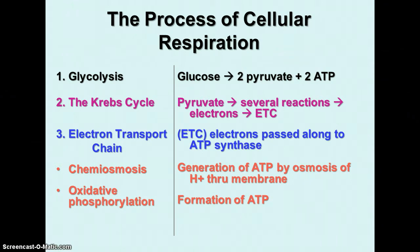In the electron transport chain, there are two main processes occurring. Chemiosmosis, which is the production of ATP by the osmosis of hydrogen ions through the membrane. And oxidative phosphorylation, which is the actual formation of the ATP molecules. Phosphorylation means adding a phosphate molecule to something.